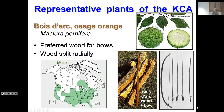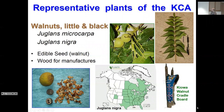Bowdark — or Osage Orange — is a member of the Moraceae, the mulberry family. This is the preferred wood for bows, particularly a mixture of the heartwood with the sapwood at that interface. You split the wood radially. This was the preferred bowwood throughout the plains region. Walnuts — Juglans microcarpa as well as Juglans nigra — very widely used. They appreciated its beauty as well. It is arguably one of the most beautiful native North American woods. Here's a Kiowa cradleboard — quite spectacular as well as being functional.